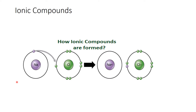Ionic compounds are the compounds which are formed after the reaction of metals and non-metals. Sodium is a metal and chlorine is a non-metal. When these two react, they form sodium chloride, that is NaCl.